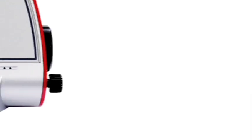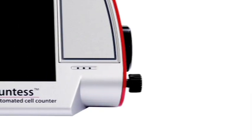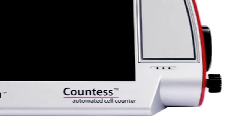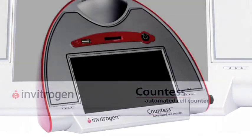The Countess Automated Cell Counter is designed to accurately assess cell count and viability and provide information about cell size, all in just 30 seconds.